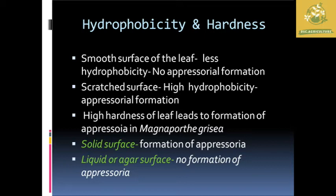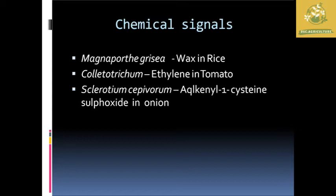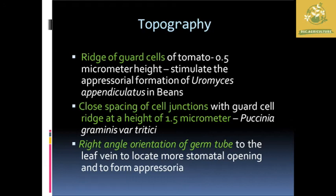Due to the high hardness of the leaf, abrasoria formation occurs — for example in Magnaporthe grisea. Solid surfaces lead to appressorium formation, while liquid or agar surfaces do not. Chemical signals include: the wax content in rice for Magnaporthe grisea, ethylene production in tomato for Colletotrichum, and allyl 1-cysteine sulfoxide in onion for Sclerotium cepivorum. These are chemical substances produced by the host plant that trigger the pathogen.